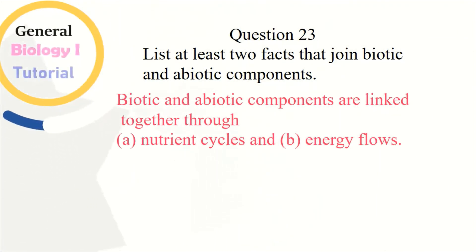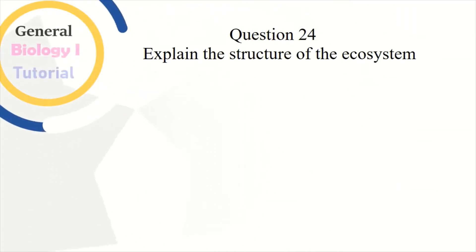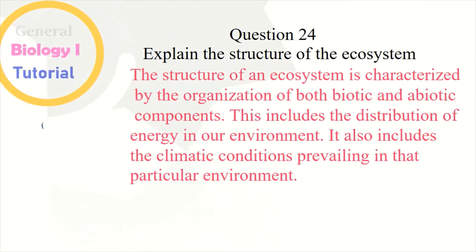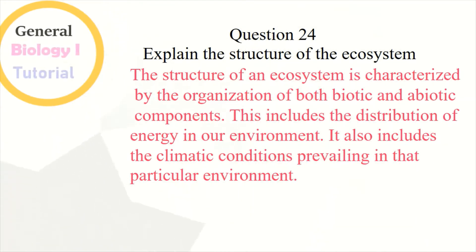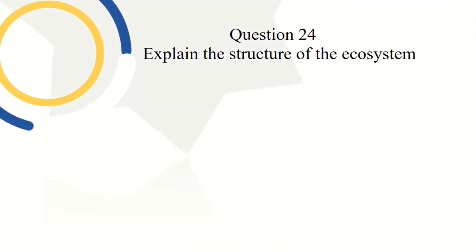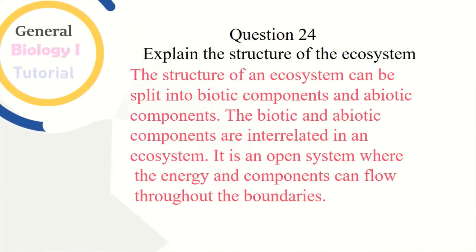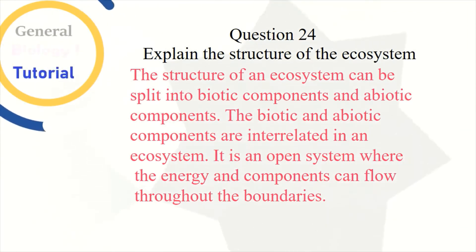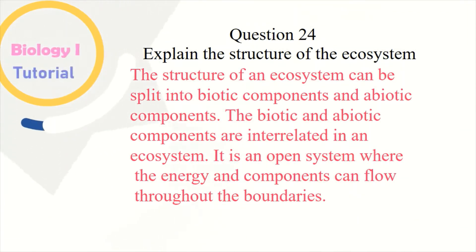Question 23: List at least two facts that join biotic and abiotic components. Biotic and abiotic components link together through nutrient cycles and energy flows. Question 24: Explain the structure of the ecosystem. The structure of an ecosystem is characterized by the organization of both biotic and abiotic components. This includes the distribution of energy in our environment and the climatic conditions prevailing in that particular environment.